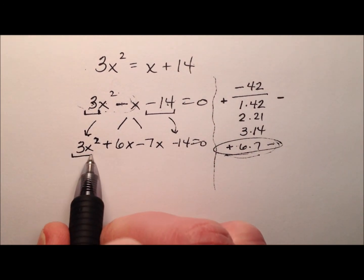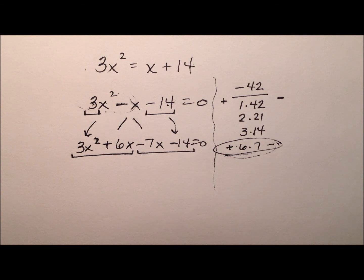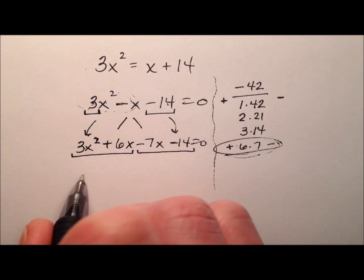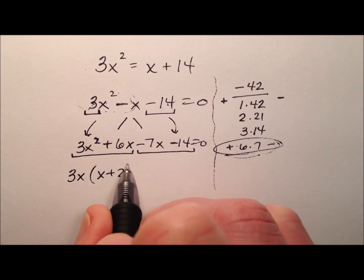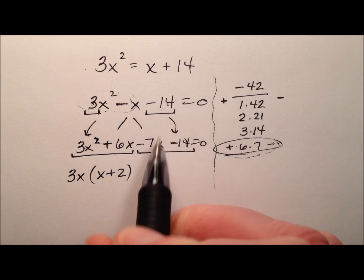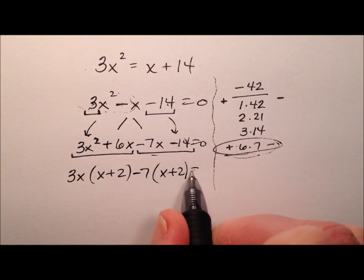What we're going to do is take these four terms now and group them into two pairs and factor the greatest common factor out of each of these pairs. So it looks like for the first pair maybe like a 3x and I'll have leftover an x plus 2, and out of the second pair it looks like negative 7 and so I'll have x plus 2.